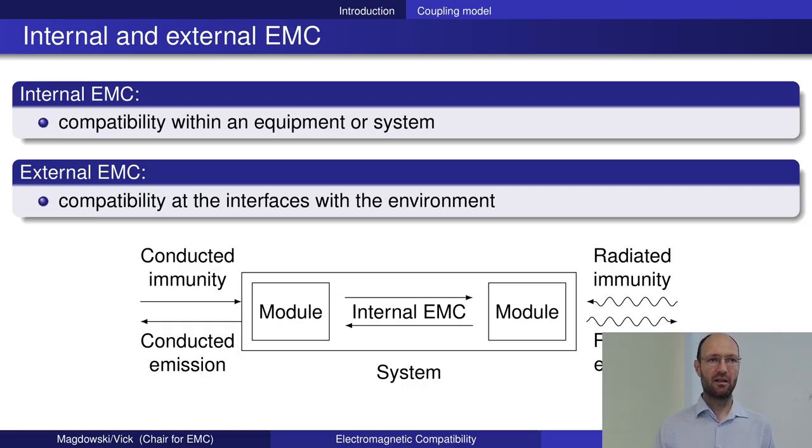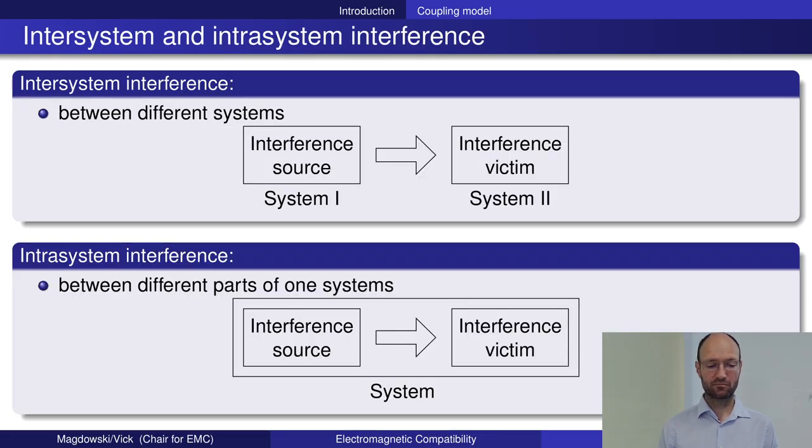We can distinguish between inter-system interference and intra-system interference. This is just a different word for external EMC and internal EMC—something that happens between systems versus something that happens between different parts within one system.